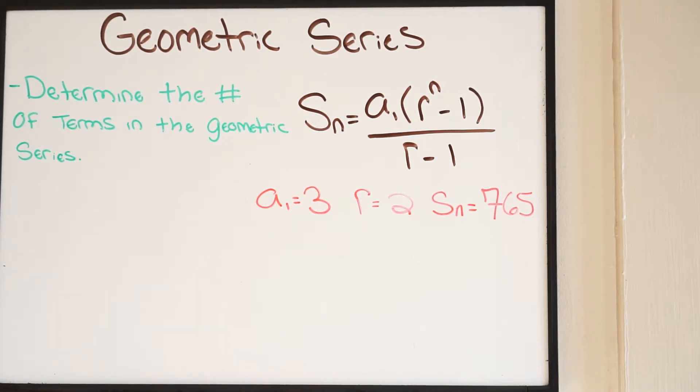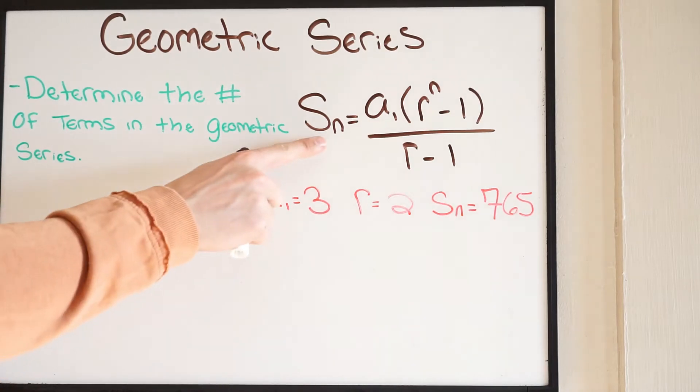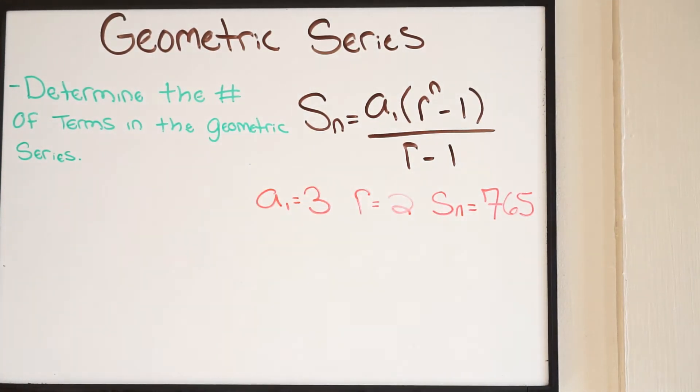What they want us to do here is find the number of terms in this geometric series. Let's talk about how we're going to determine this. Our first step is we need to use our equation here for geometric series, and we're simply just going to plug in our known values. We know that the sum of the geometric series is going to be 765, so let's fill that in.